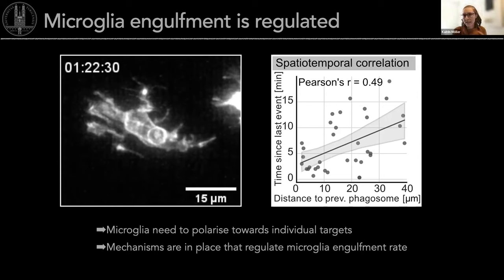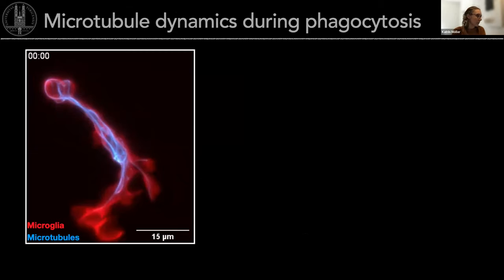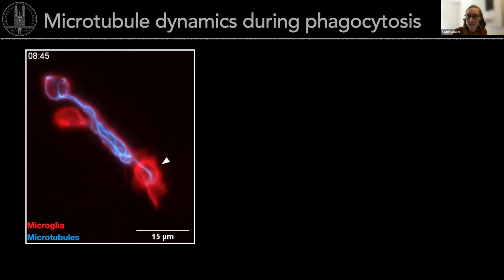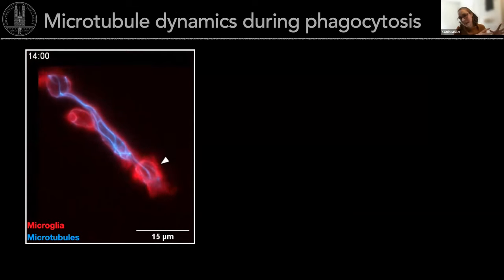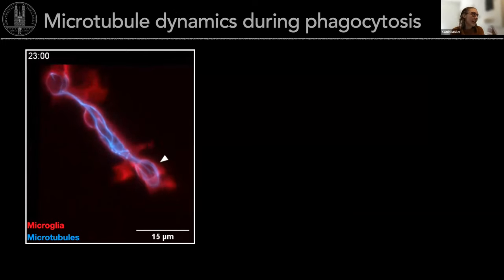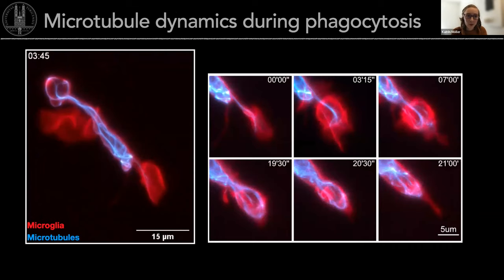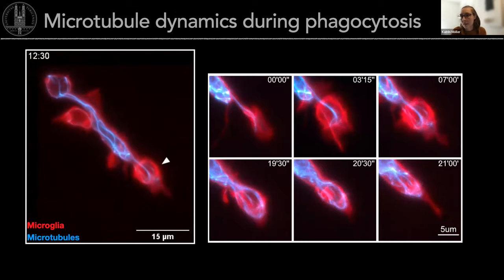To investigate what these mechanisms were, I decided to generate genetic markers for intracellular structures inside the microglia. One of these was microtubules. I had to do very fast imaging — 15 seconds — of a large part of the brain to find exactly the individual microglia. I found that yes, microtubules are involved — they form a cage around the phagosome — but they don't seem to be a critical part of when or where the microglia is engulfing. So there was something else.